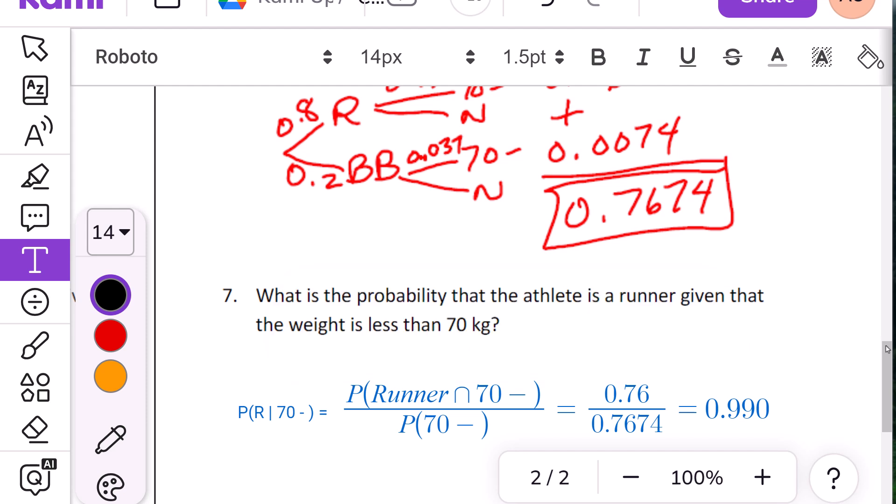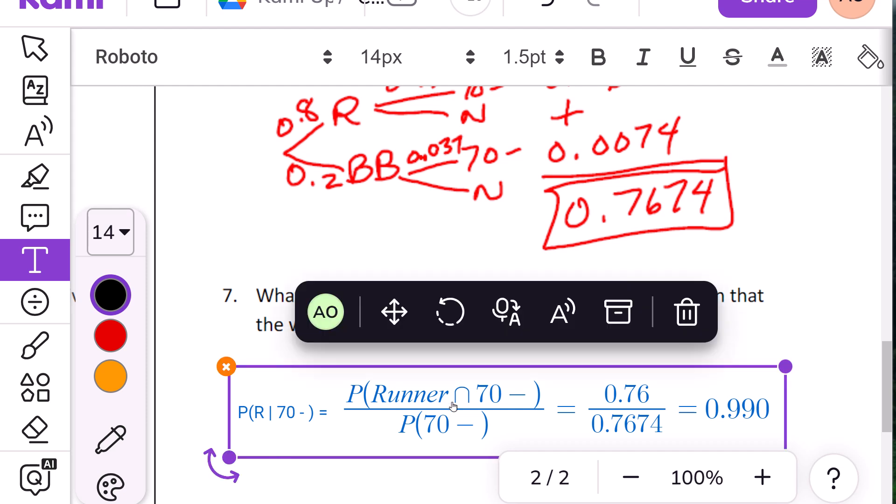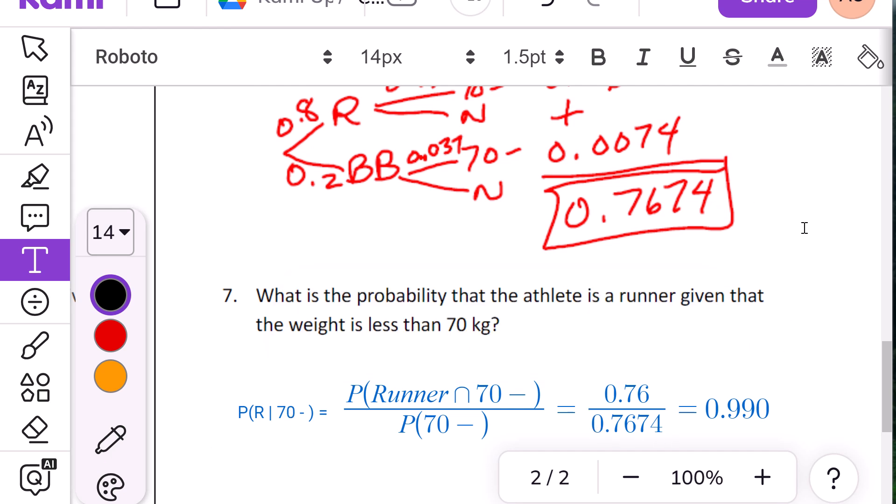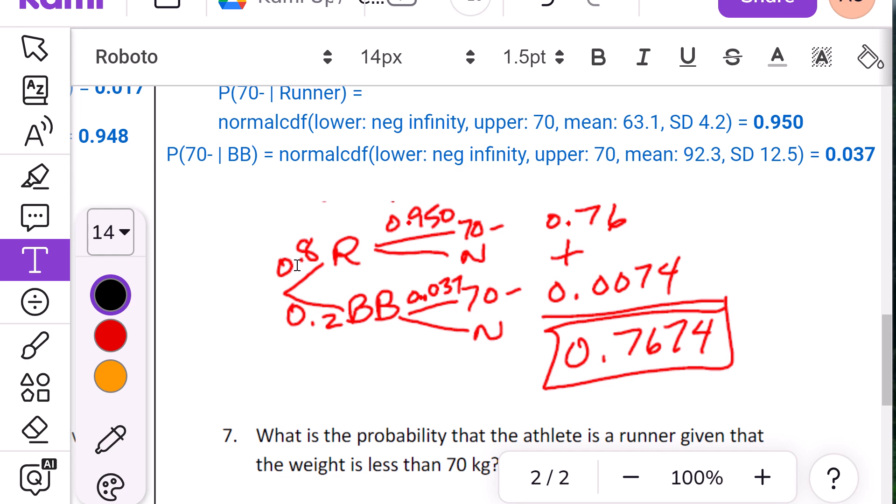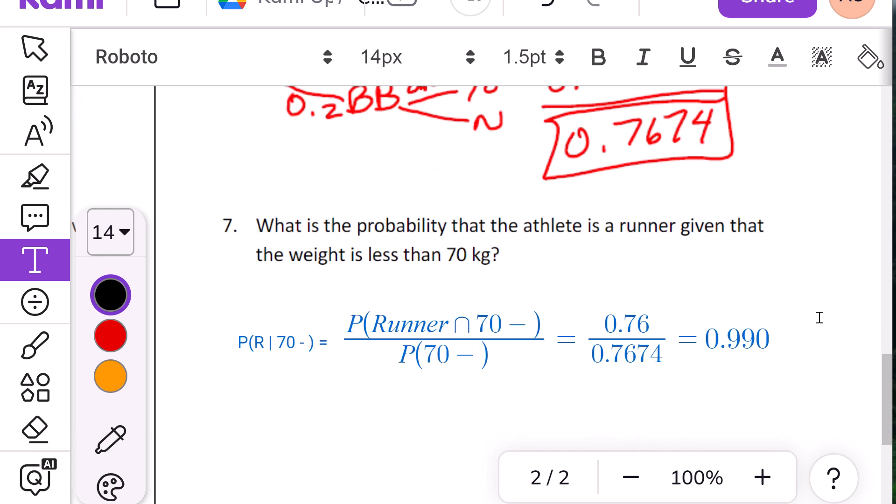What is the probability that the athlete is a runner, given that they weigh less than 70 pounds? So we can go to this formula right here. The probability of a runner, given they're lighter weight, is the probability of a runner and lightweight, divided by the probability they're lightweight. So that second one is always the one underneath. So I pull this number down here from that 0.7674. And I pull the probability for runners, 0.8 that the athletes are runners times the 0.950. And I get 0.76. And so my probability is 0.990.